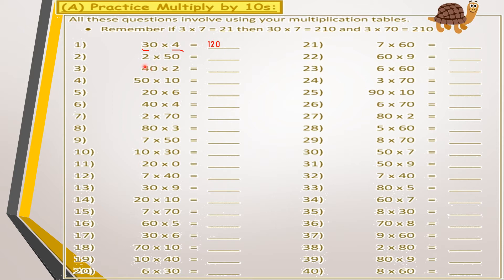For 2 multiplied by 50: multiply 2 by 5, which equals 10, then drop down the zero next to the 5 in 50, giving 100. For 2 multiplied by 40: multiply 2 by 4, which equals 8, then drop down the zero, giving 80.